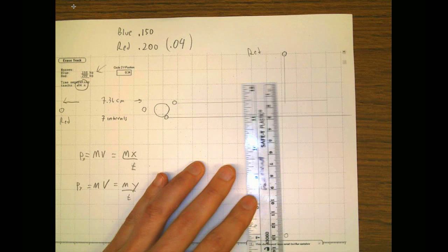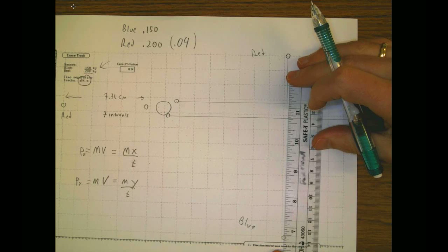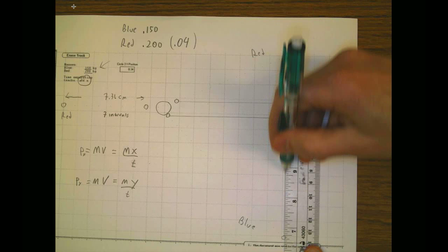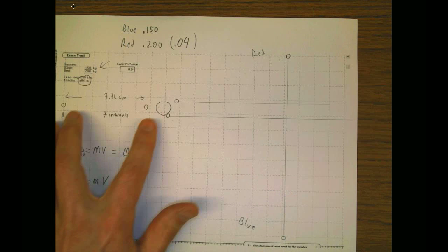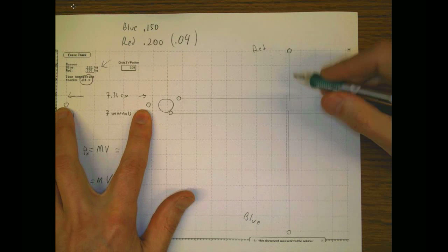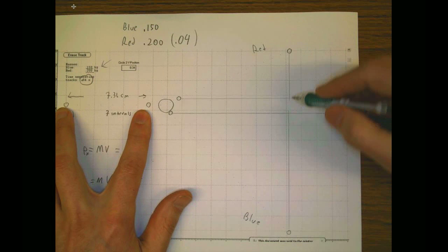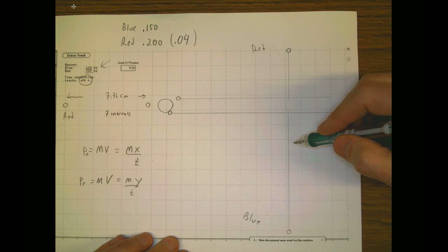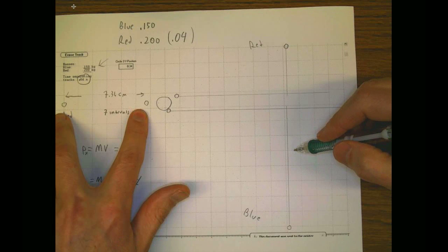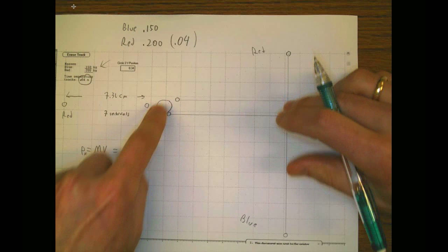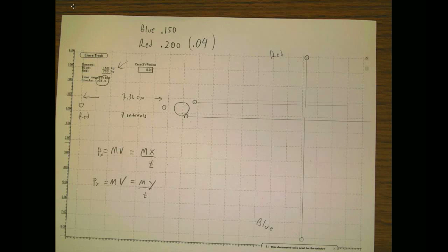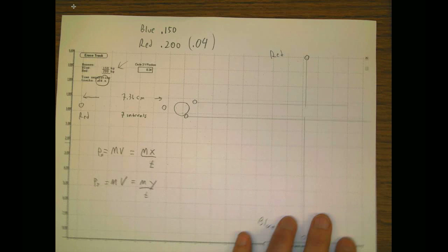You'll see that we started off with only x-momentum. We end up with x-momentum for each glider, plus positive y-momentum and negative y-momentum. I'm betting the positive and negative y-momenta add to zero since there wasn't any y-momentum to begin with, and the x-momenta of both gliders will add up to the original x-momentum. I'll put the rest on another video so this one isn't too long.